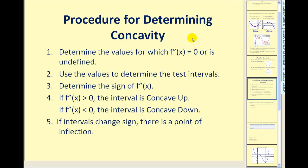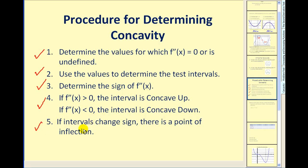So let's put all these pieces together. Here's the procedure for determining concavity. Step one, we will determine the values for which the second derivative is equal to zero or undefined. Step two, we'll use these values to determine the test intervals over the function's domain. Then we'll determine the sign of the second derivative — if the second derivative is positive, it's concave up on the interval; if it's negative, it's concave down. And last step, if the intervals do change sign, there is a point of inflection.